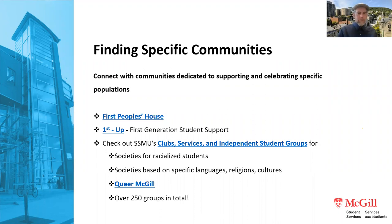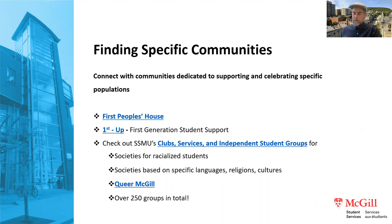The Student Society of McGill University (SSMU) has club services and over 250 independent student groups — interest or hobby-based clubs as well as specific services and societies for racialized students, and societies based on specific languages, religions, and cultures, such as the Black Student Network, the Hellenic Student Society, and Queer McGill. There's a lot to explore if you want to find specific communities.